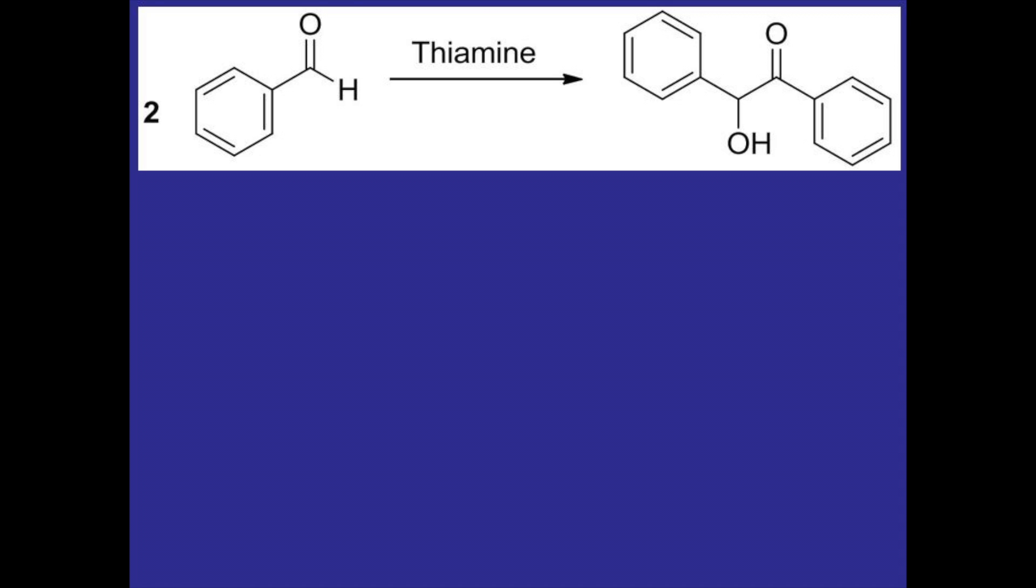Here's the reaction that we'll be doing. We'll be taking two benzaldehyde molecules and reacting them with each other to form the benzoin compound and we'll be using thiamine as the catalyst as it will stabilize the intermediates throughout the reaction.